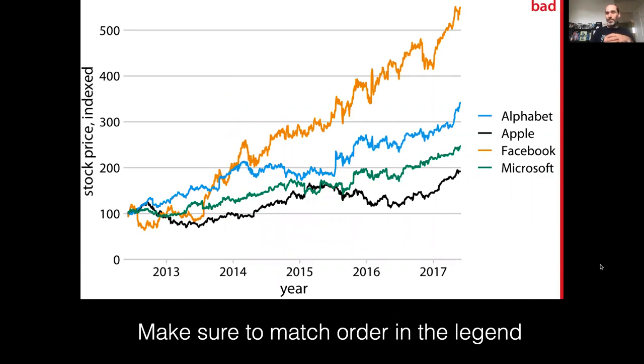The other thing we can run into with encoding is conflicts between how we've encoded pieces of information. So here we have a graph of stock prices of the four biggest tech companies in the world over time, and we have a clear ordering of those stock prices over most of the time series. And that ordering of the prices actually conflicts with the legend. So the legend is in alphabetical order rather than being in the same order as the data itself, which creates a mental conflict between the legend and the data.